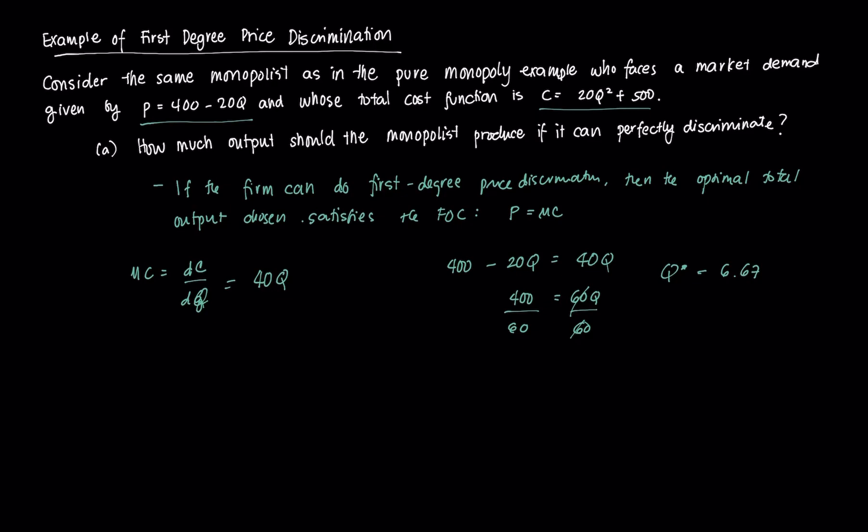Therefore, in order to maximize its profit, it should produce Q equal to 6.67. That's what its production will be. And you'll note that that production is significantly greater than if it were a pure monopoly. Again, because it can price towards something equal to marginal cost rather than MR equals MC and reap the additional consumer surplus and prevent the deadweight loss.